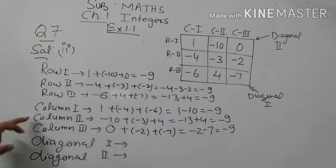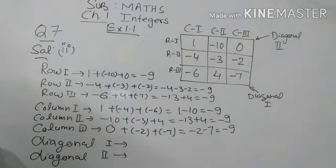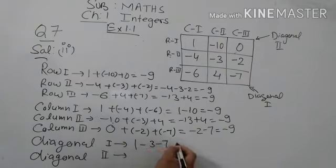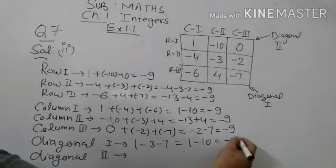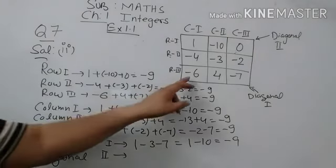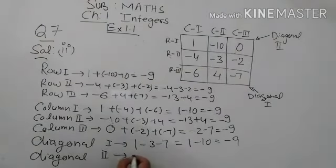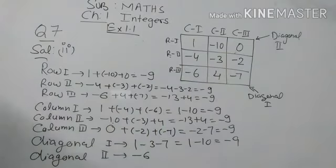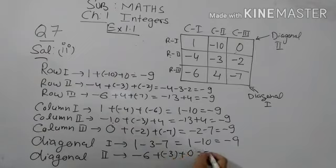Now we find diagonal one and diagonal two. For diagonal one, the integers are 1, minus 3, and minus 7: 1 minus 3 minus 7 equals minus 10, giving minus 9. For diagonal two: minus 6, minus 3, and 0. So minus 6 plus minus 3 plus 0 equals minus 9.